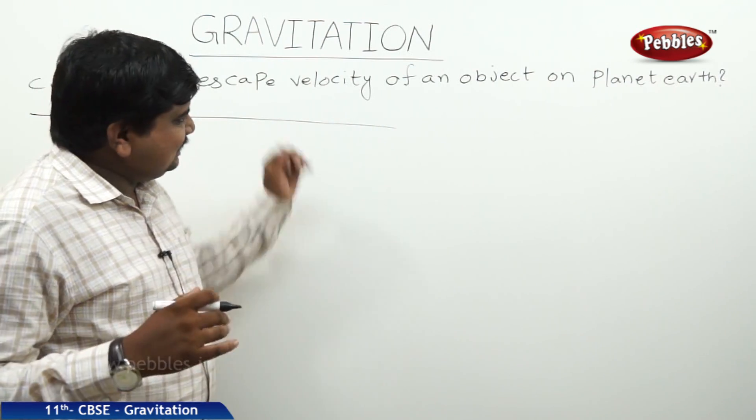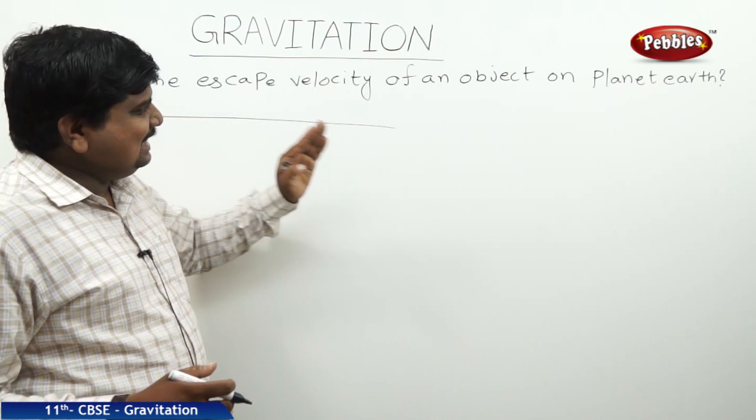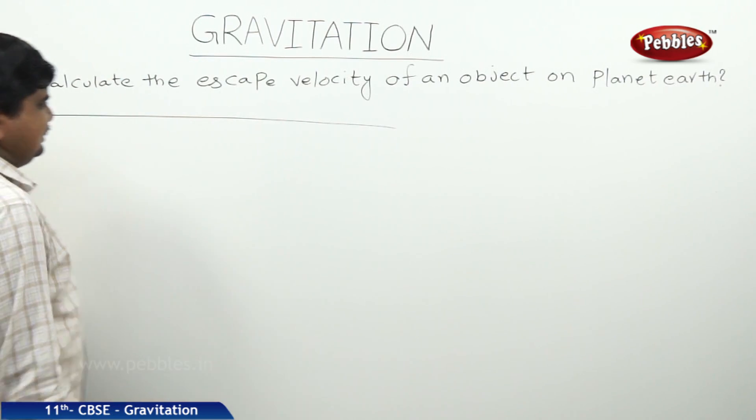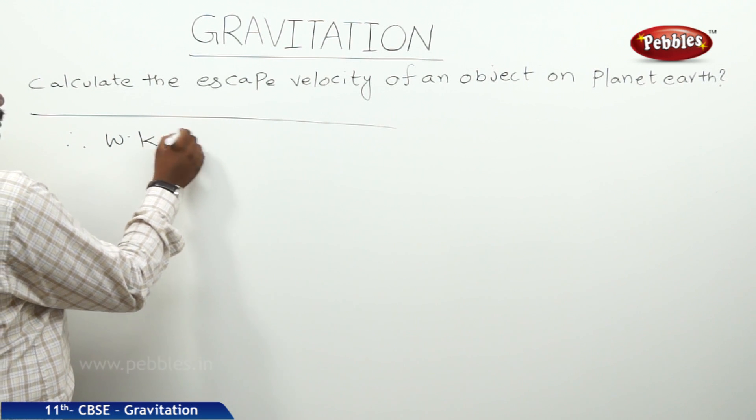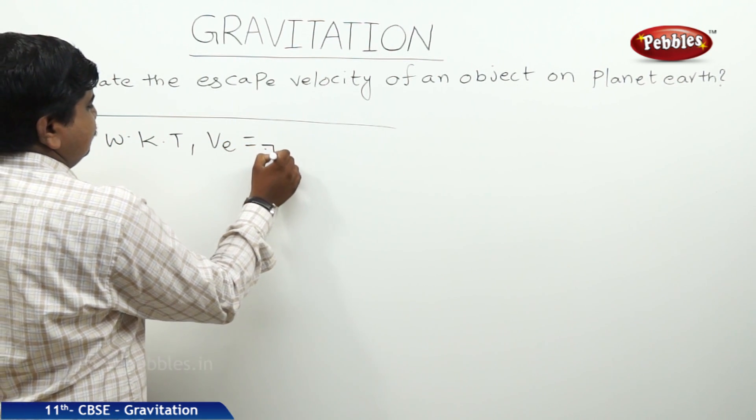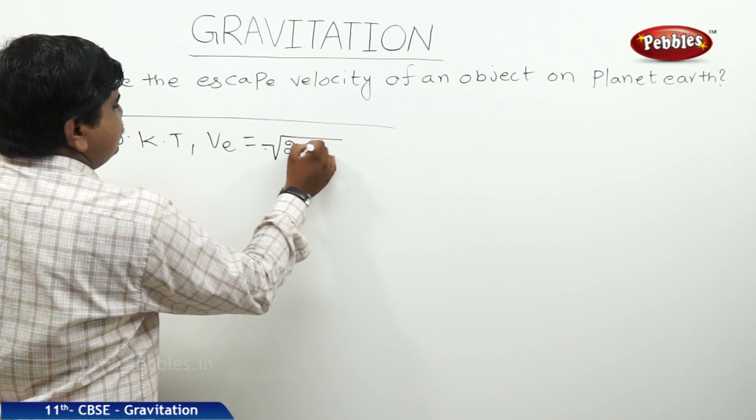No value was given in the problem but we can easily find out the escape velocity. We know that escape velocity VE is equal to square root of 2GR.